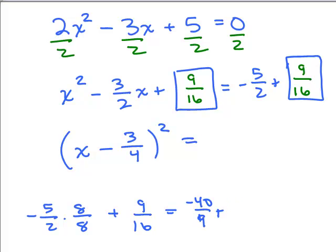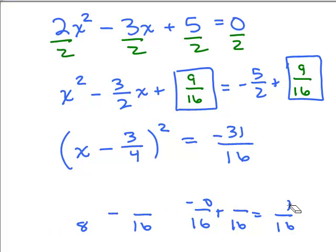That's going to give you, oops, sixteenths. Made a mess of that. That's going to be negative 31 sixteenths. So the right-hand side simplifies to negative 31 over 16. Now we're ready to use the square root property, take the square root of both sides.